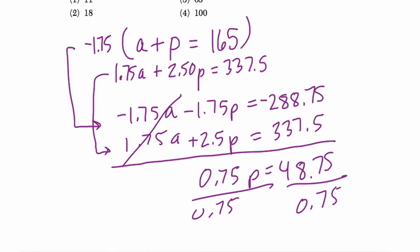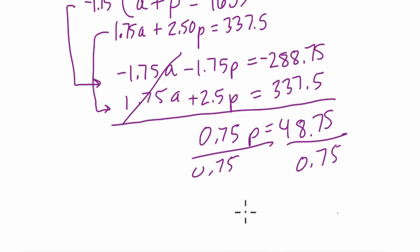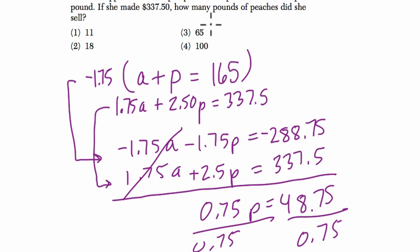When you do it by hand if you'd like, P is going to equal 65. That's the number of peaches that were sold, which is choice three.